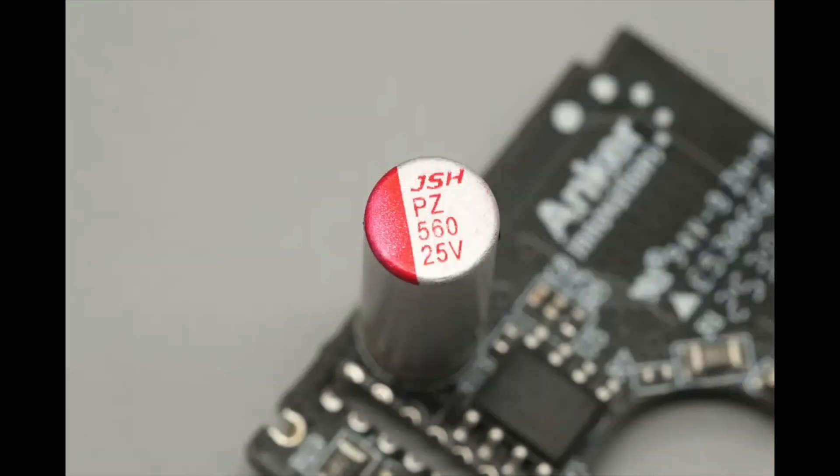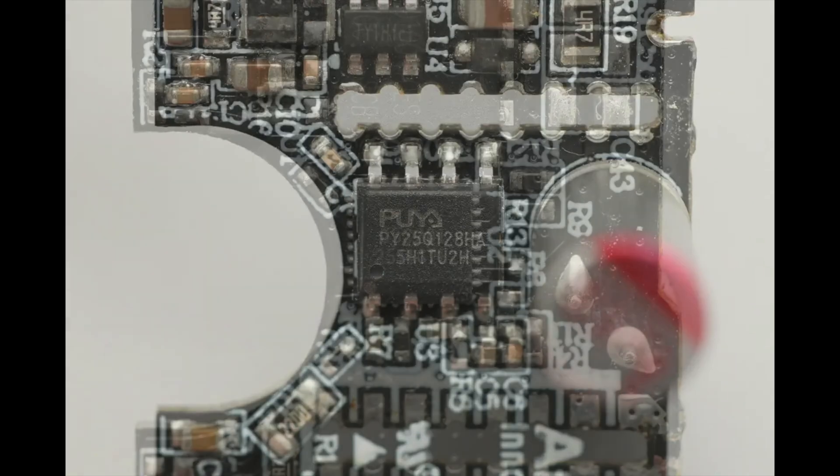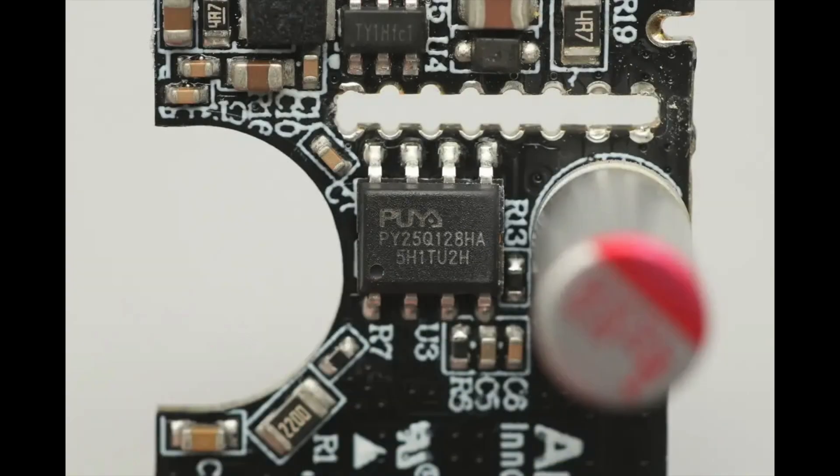The solid capacitor for output filtering is from JSH, rated at 25 volts 560 microfarads. The MCU used for display control is marked 05320T and comes in a QFN32 package. The memory is from Puya, model PY25Q128HA, in an SOP8 package, used for storing configuration data.